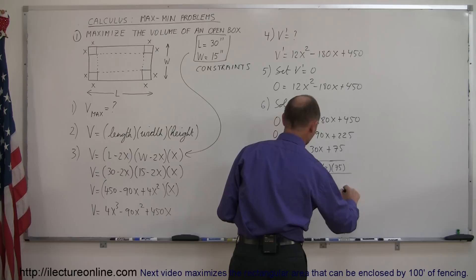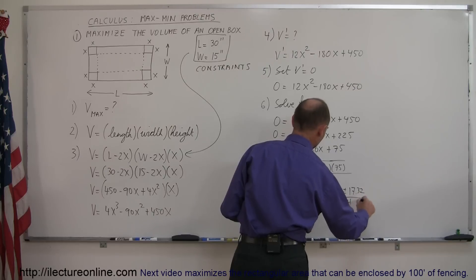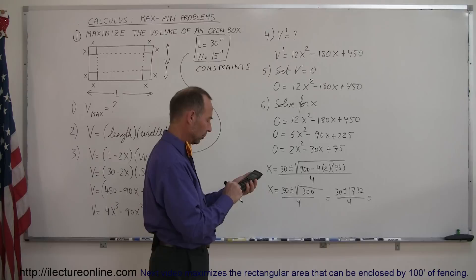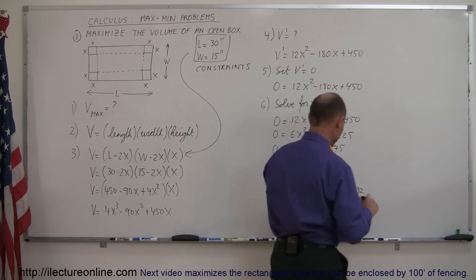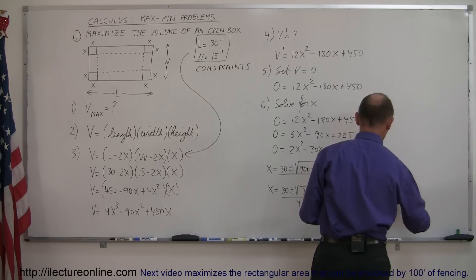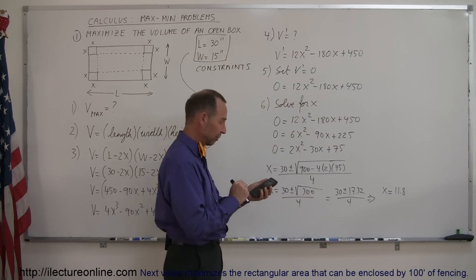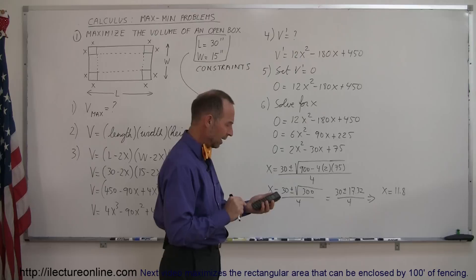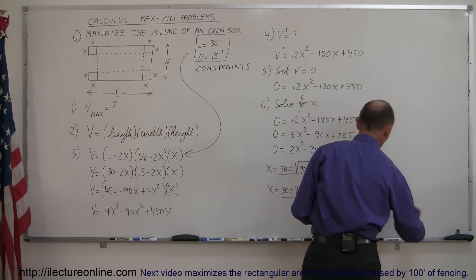That's equal to 30 plus or minus 17.32 divided by 4. Let's first add it together and see what we get. We have plus 30 and divided by 4 equals, that's 11.8. So that means x equals 11.8. And now if I subtract 17.32 from 30, 30 minus 17.32 and divide that by 4, I get 3.17. X equals 3.17.